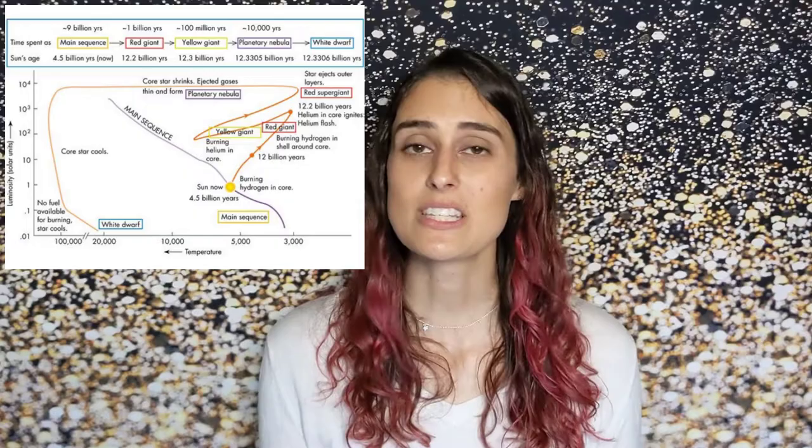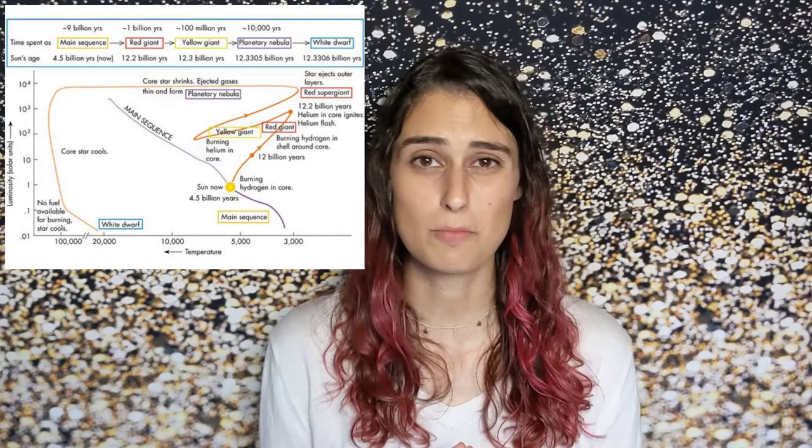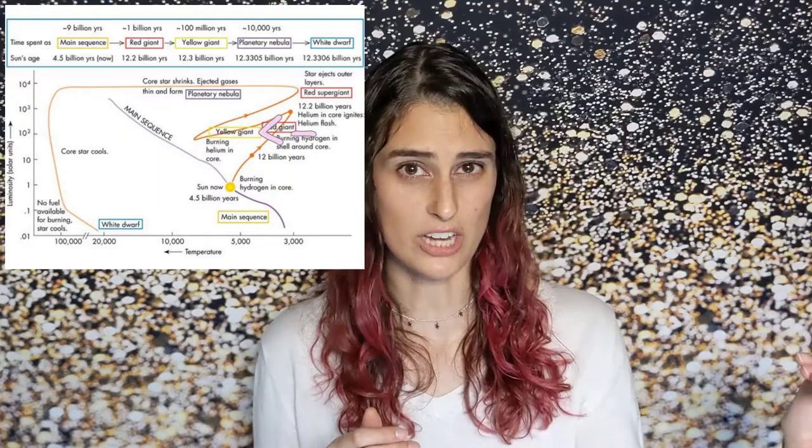Eventually, once the hydrogen in the core is gone, the core will shrink while the outer part of the star expands and cools, and the star travels up the red giant branch for about a billion years. Once the core becomes hot enough to burn helium, it will flash and start burning helium, becoming a horizontal branch star for about 100 million years.